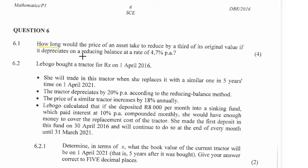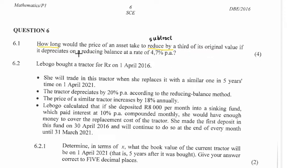So how long would the price of an asset take to reduce by a third of its original value, if it depreciates on a reducing balance at a rate of 4.7%, compounded annually. 'Reduce by' means subtract — it's very important for us to be able to convert from English language to mathematical language.